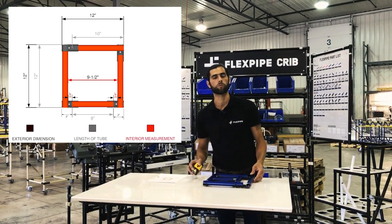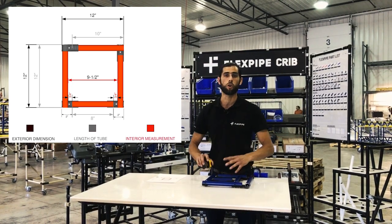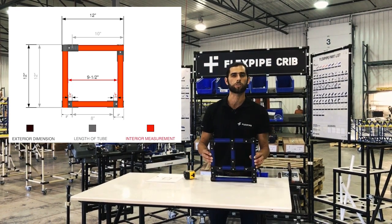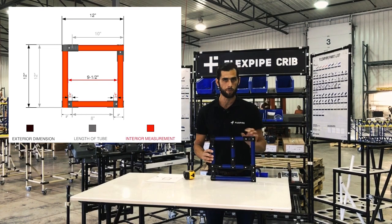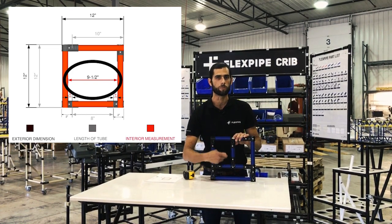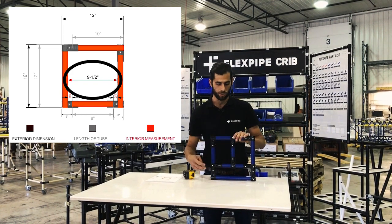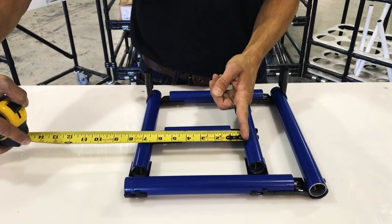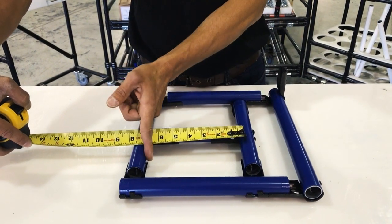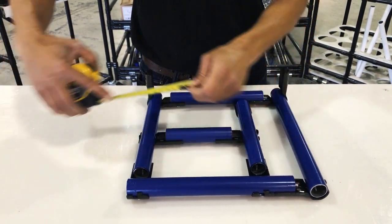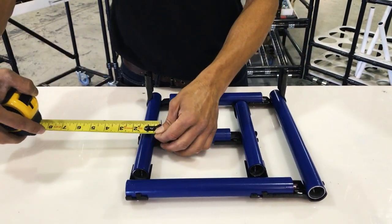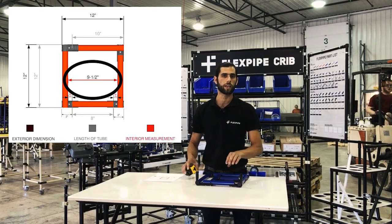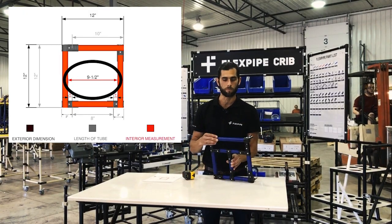That's when you want to work with external and overall dimensions. When you're looking for perhaps a supporting pipe and you're looking at an internal dimension, then you're going to want to measure from pipe to pipe on the inside of each pipe. From there, remove three-quarters of an inch from each side that you're going to be attaching that interior pipe.